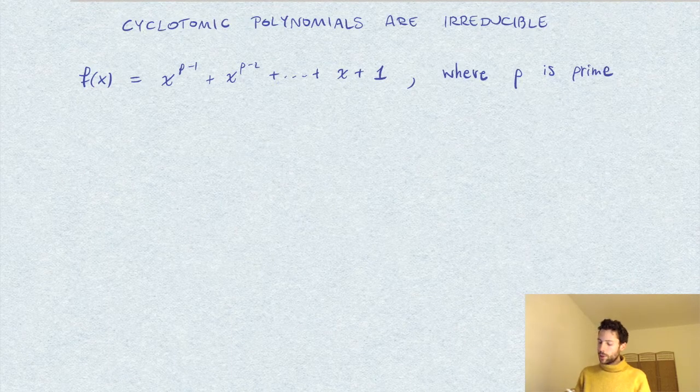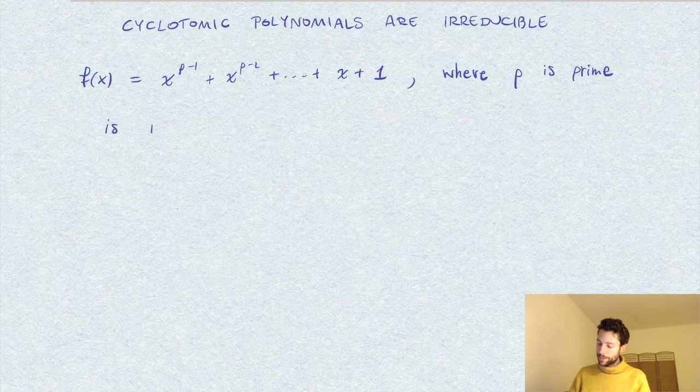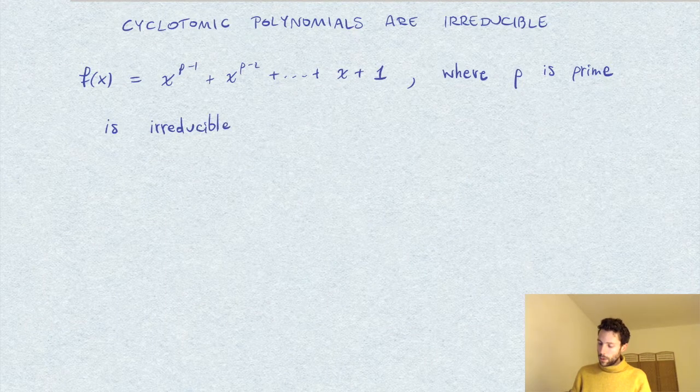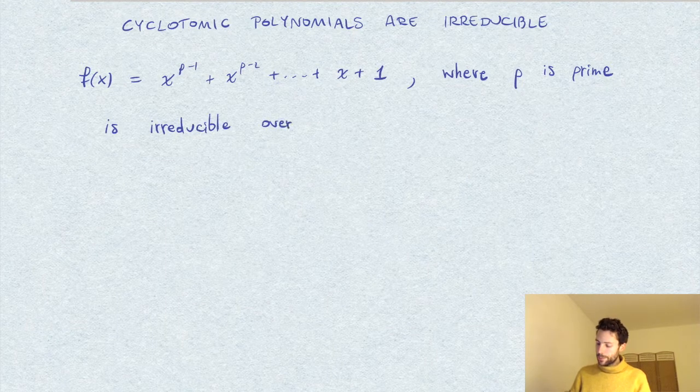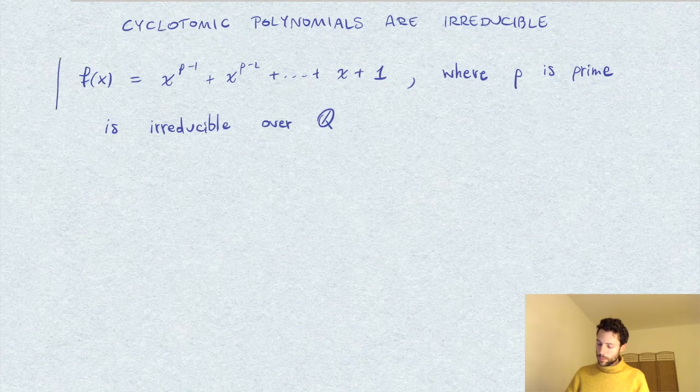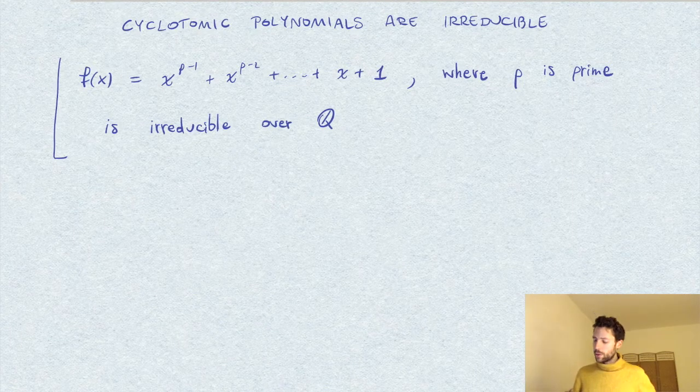So such a polynomial is irreducible over Q. Of course, in this case it will also be irreducible over Z.